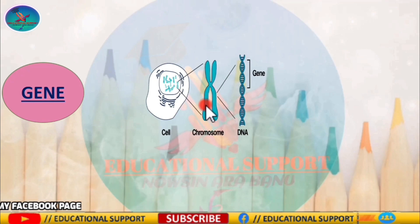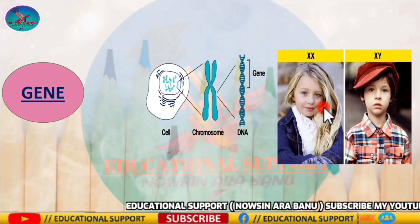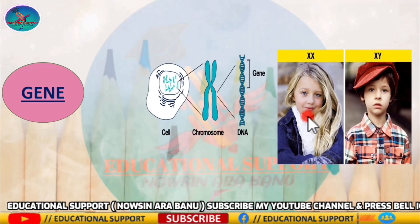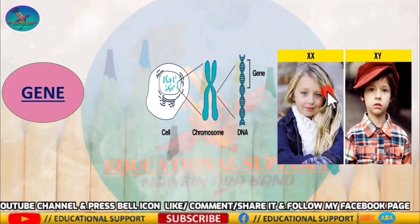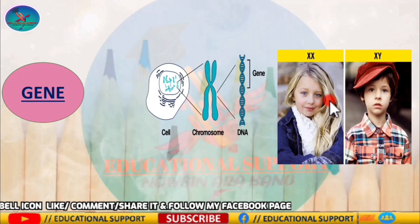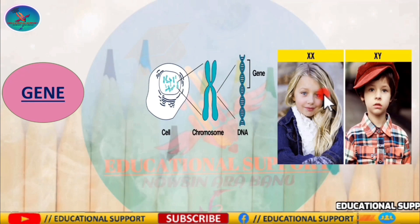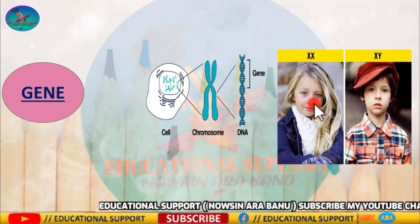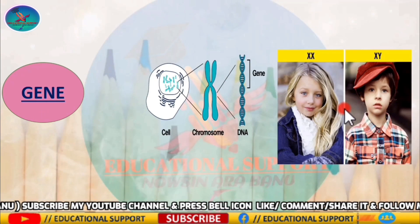Genes contain the data needed to build and maintain cells and pass genetic information to offspring. Each cell contains two sets of chromosomes — one set comes from the mother and the other comes from the father. The male sperm and the female egg carry a single set of 23 chromosomes each, including 22 autosomes plus an X or Y sex chromosome. A female inherits an X chromosome from each parent, but a male inherits an X chromosome from their mother and a Y chromosome from their father.